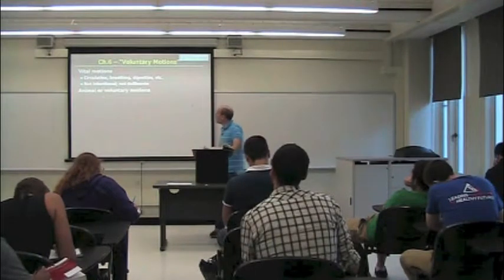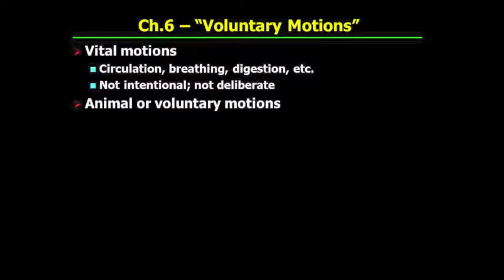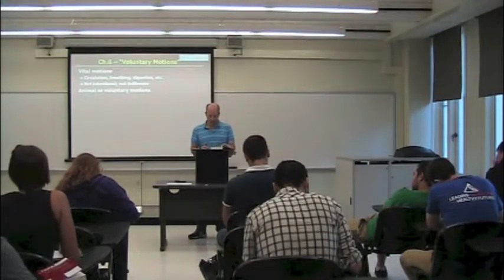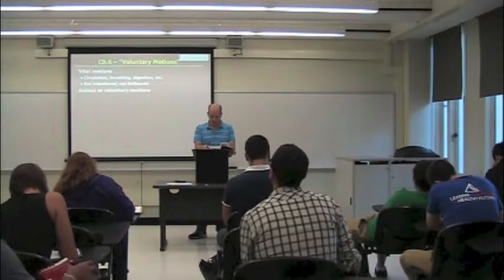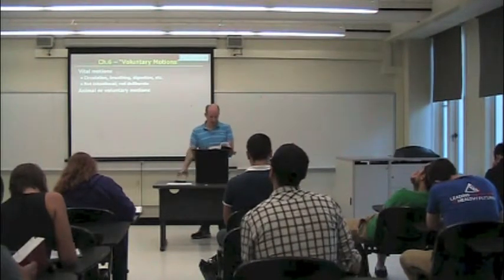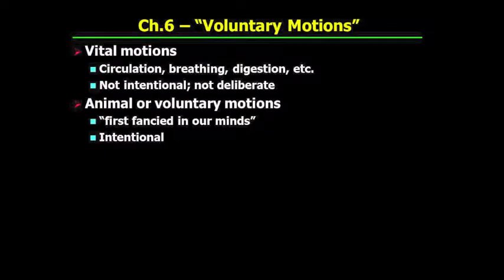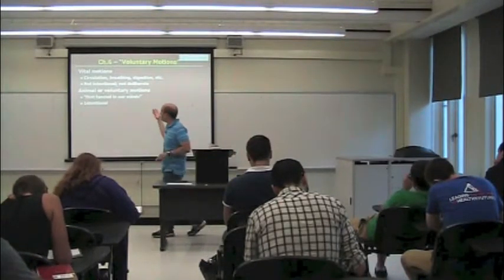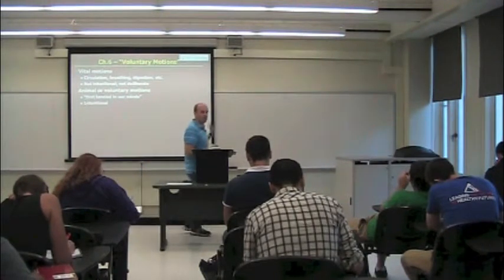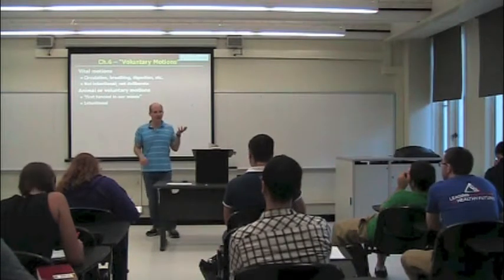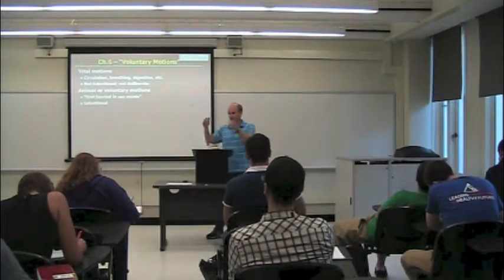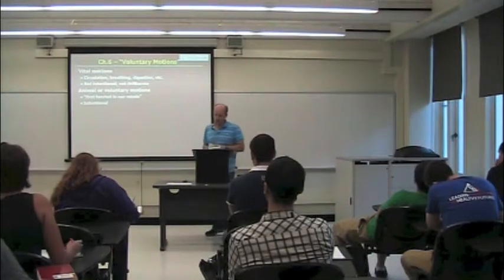Distinguished from these are what he calls animal or voluntary emotions. So these are things that he says are, first, fancied in our minds, and these are intentional. So these are choices that we make. And being fancied in our mind means that we have a thought about the goal, a thought about what it is that we're doing. And it's that thought that leads to the motion of the body in the behavior.